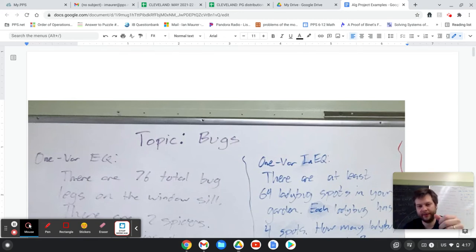So one variable equations, one variable inequalities, two variable equations, two variable inequalities, and then systems, which just means that you're bringing more than one of those things at the same time.